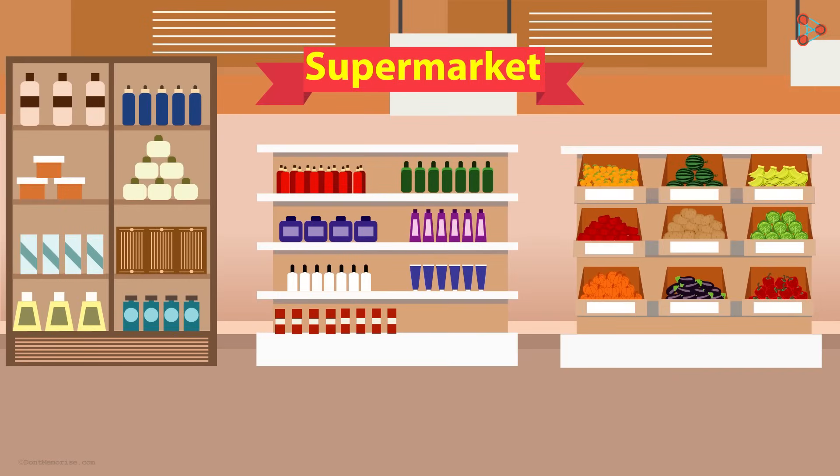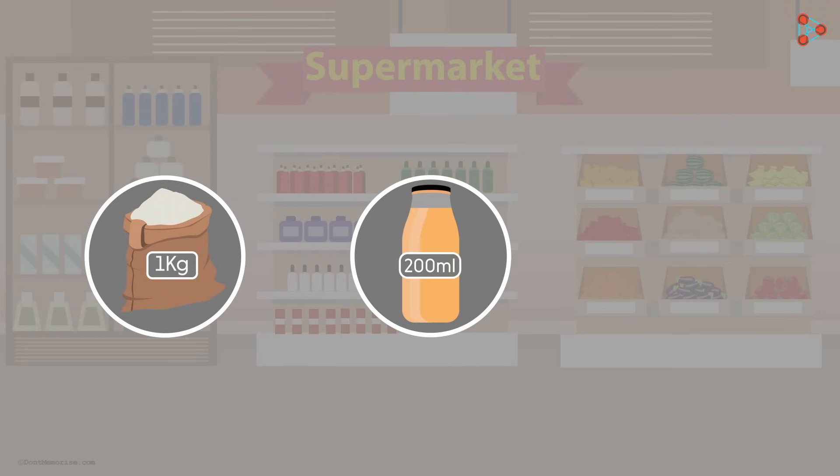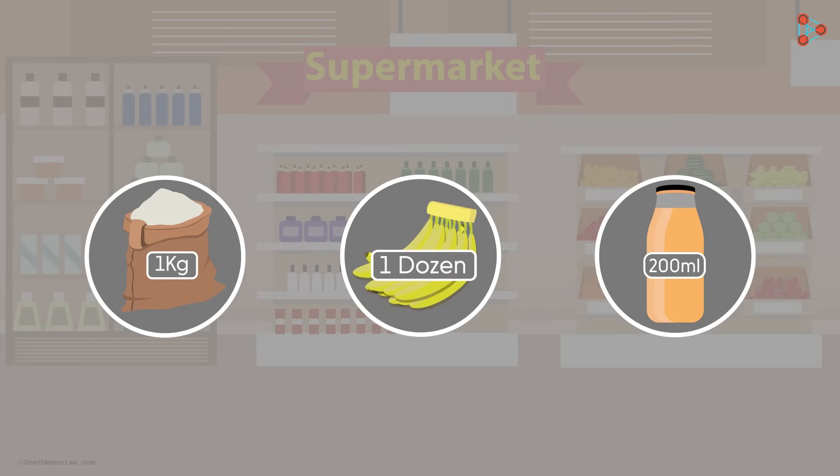When we go to a supermarket, we always buy things using standard values. In other words, we always take 1 kg of rice or 200 ml of fruit juice. Fruits are sometimes counted using the unit dozen. One dozen means 12 of something. These are terms used in everyday life.